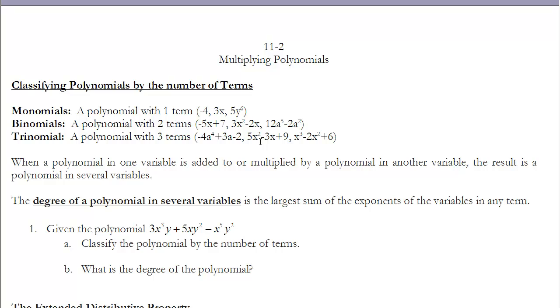When we take a polynomial in one variable and add it or multiply it by a polynomial in another variable, the result is a polynomial in several variables. So a polynomial does not have to have just one variable in it. It can have multiple variables, and that will occur if I take two of them and add them together or multiply them.